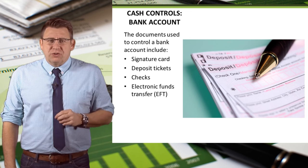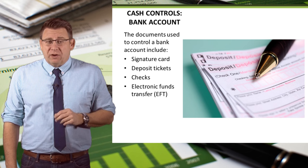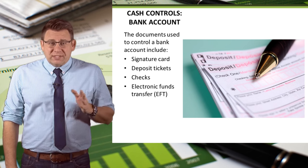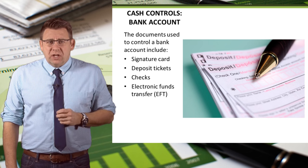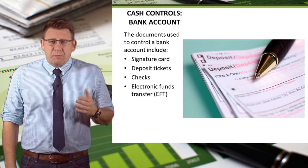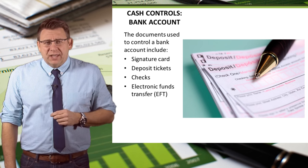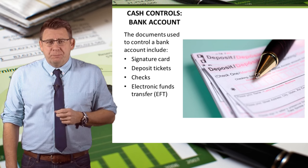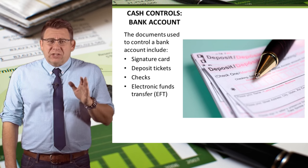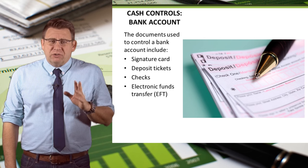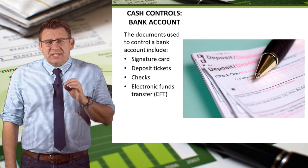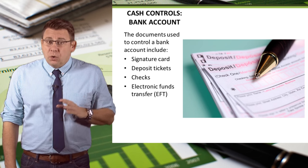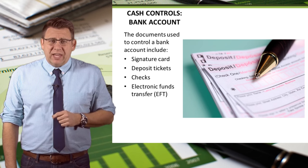The documents used to control a bank account include a signature card, which authorizes who has access to the account; deposit tickets, which summarize the amount of deposits; checks, which provide a paper trail of cash spending; and electronic funds transfers, sometimes known as EFTs. EFTs are a system of transferring money directly from one bank account to another without any paper money changing hands.